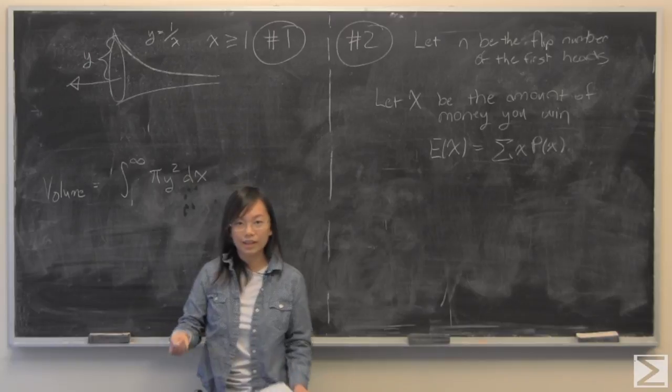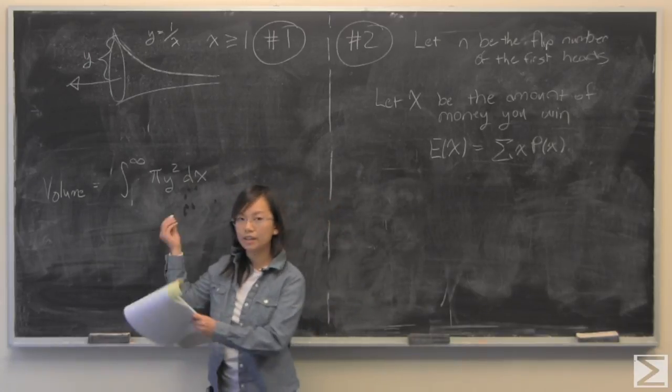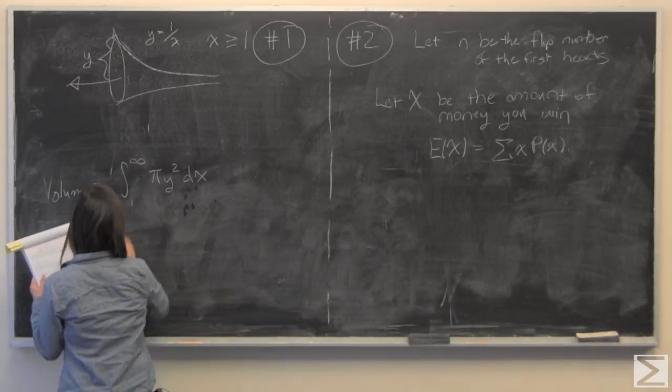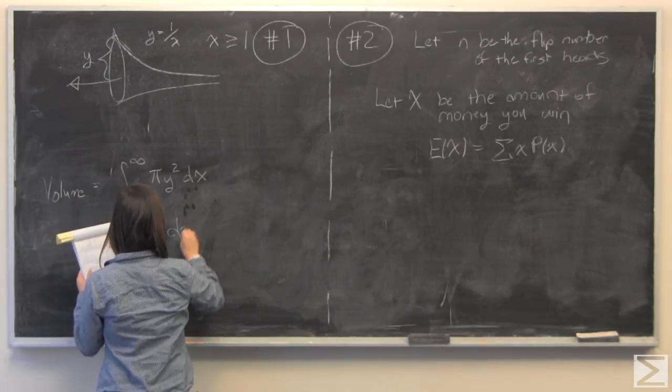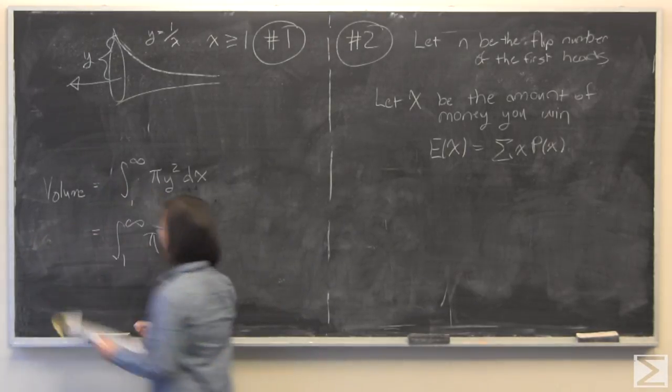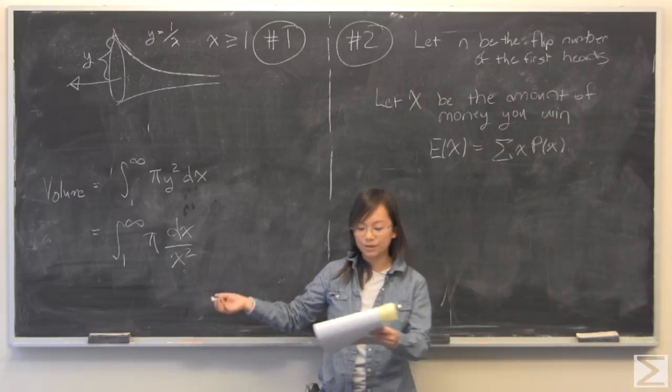So I'm going to go ahead and plug in the value of y. That will give us 1 to infinity, pi dx over x squared, because I am just plugging in y and then squaring it.